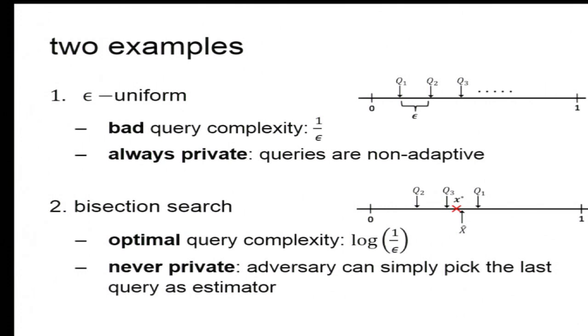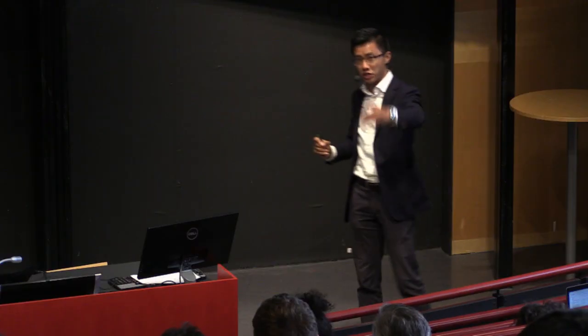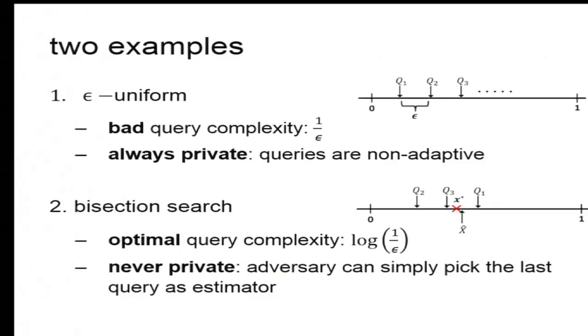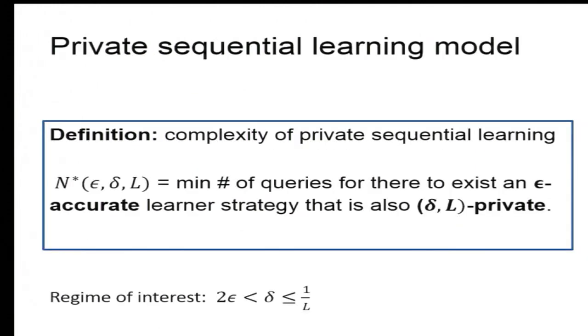Now, just revisit these two simple examples. We can see the epsilon uniform is terrible in complexity, but it's trivially always private. My questions are not even correlated with the target. On the other hand, the bisection search is provably optimal in terms of complexity, but it's never private. Because, as you can see, if I know you're using bisection, I can follow you till the last question and simply pick the last question that's close enough for me to the target. So those are the two extremes. What happens in between?